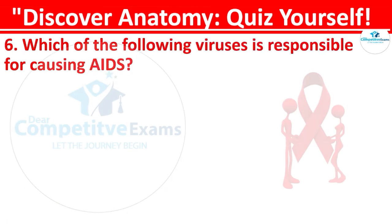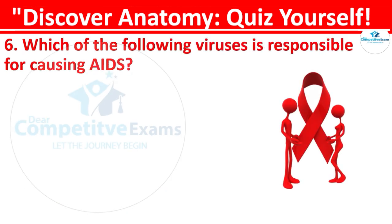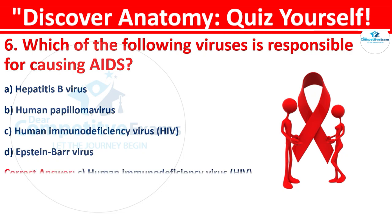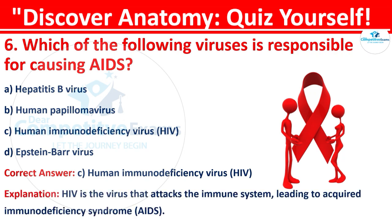Question 6: Which of the following viruses is responsible for causing AIDS? Your options are: Hepatitis B virus, Human Papillomavirus, Human Immunodeficiency Virus (HIV), or Epstein-Barr virus. The correct answer is C, that is Human Immunodeficiency Virus, HIV. HIV is the virus that attacks the immune system, leading to Acquired Immunodeficiency Syndrome, known as AIDS.